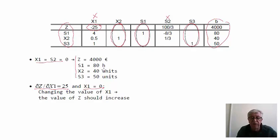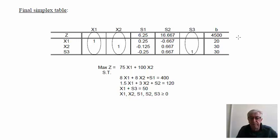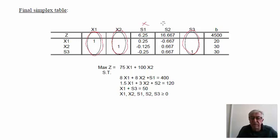We now have the final simplex table, which is the optimal table. The basic variables are x1, x2, and s3. The non-basic variables are s1 and s2. Setting s1 = s2 = 0, we extract the optimal solution, which matches what we found graphically.